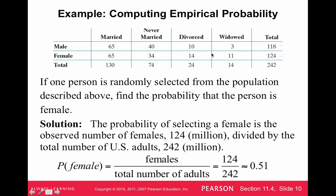We have a table. Let's say we sampled 242 people and asked them about their marital status and if they were male or female. If one person is randomly selected from the population above, find the probability that that person is female. We need to figure out the total number of females, which is summed up here, 124, and the total number is 242. If we did 124 divided by 242, that would give us about 0.51.